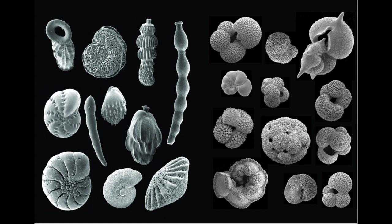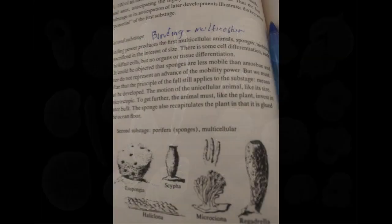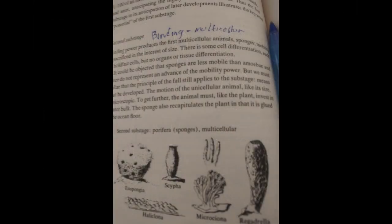Moving along to the next stage, the principle of binding is represented by sponges, which are very strange creatures who have now given up mobility. They root themselves to the ocean floor, giving up mobility — kind of recapitulating plants in that sense — for bulk, for mass, and therefore represent the multicellular principle of binding. So we move from unicellular to multicellular.